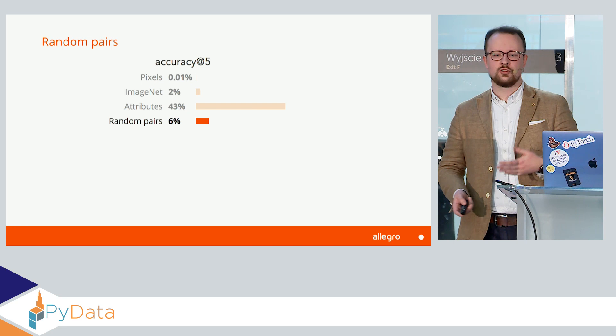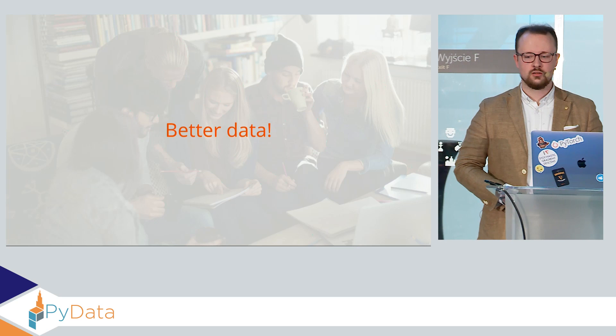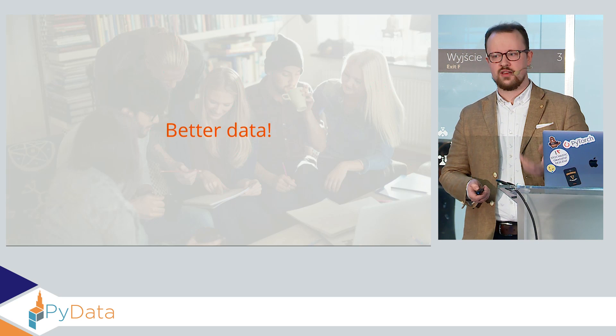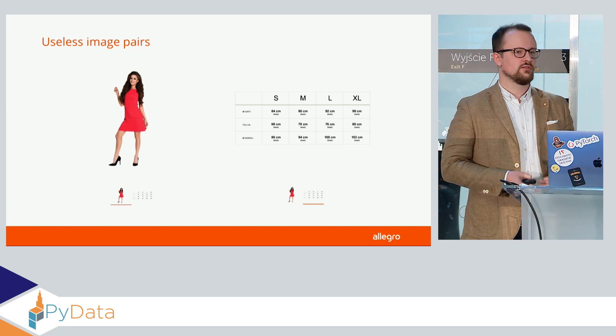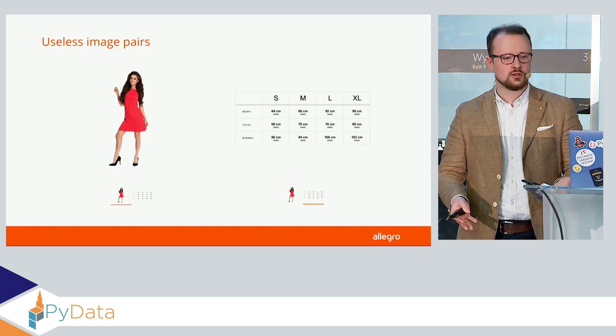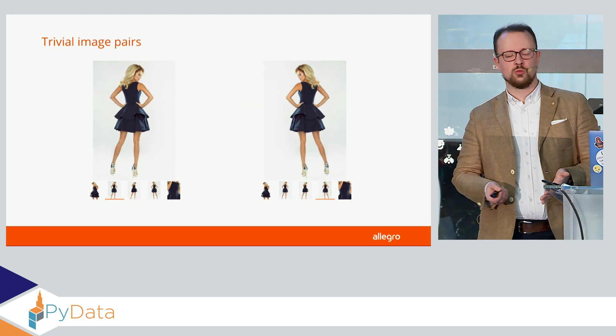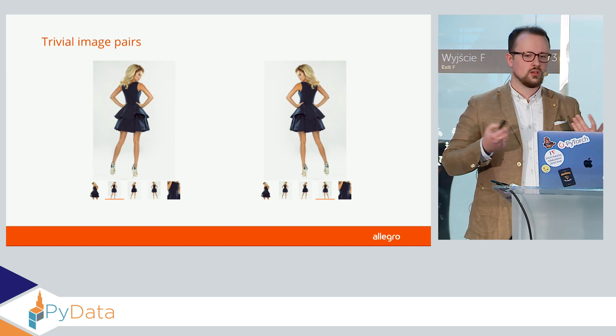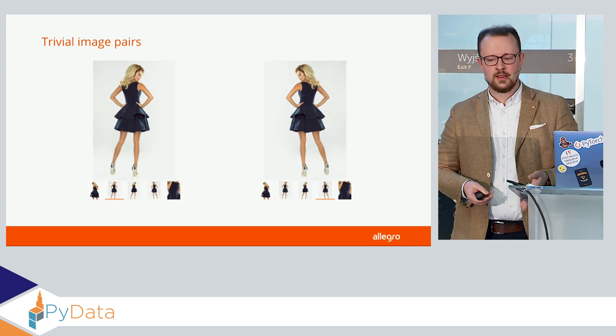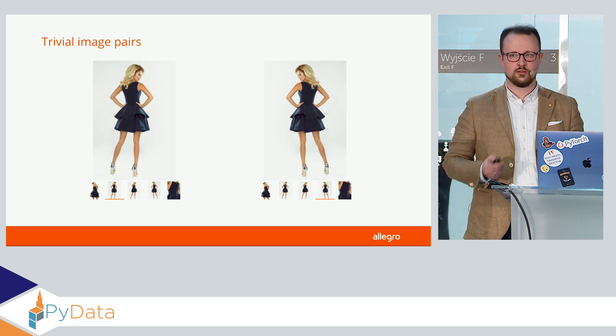In machine learning, we can either go for better data or a better model. I firmly believe that better data is crucial. Looking at the photos we have in our dataset, we have some useless pairs — for example, a dress paired with a size table. This may be very useful for the customer, but for our model it's pretty much impossible to learn from. We also have a bigger problem: trivial, naive image pairs, where we have pretty much the same image on multiple photos added by the seller. Our model learns a very shallow relationship and eventually degenerates the similarity to between pixels.